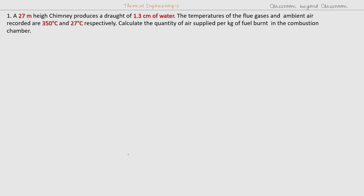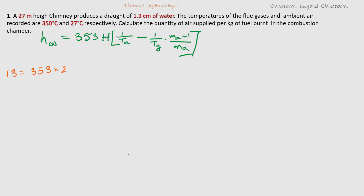Let's solve the problem. We will use the formula: Hw equal to 353H and so on. H is given, Ta is given, Tg is given, and Hw the manometer reading is also given. We are to find out the unknown quantity, that is Ma, mass flow rate. Putting the values: Hw is equal to 13 millimeter, H is equal to 27 meter, Ta is equal to 300, Tg is 623, and we are to find out Ma from this equation.